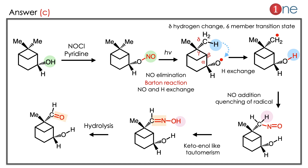The answer is C. You have NOCl and pyridine — by looking at these reagents you might guess it is a Barton reaction. In the Barton reaction, the first step is converting OH into O–NO. The O–NO has the capability of leaving as a free radical when you use light. What really happens is a 6-membered cyclic intermediate forms, hydrogen transfers to the radical at the delta carbon (forming a CH2 radical), and then the remaining NO adds to that position.